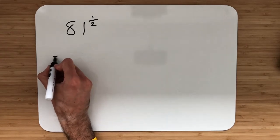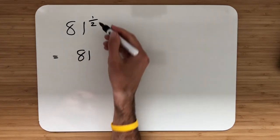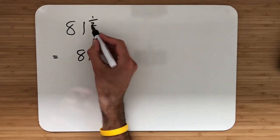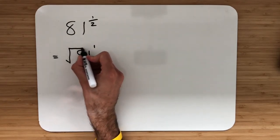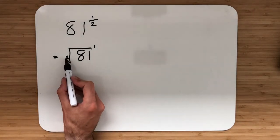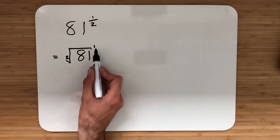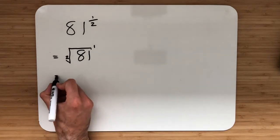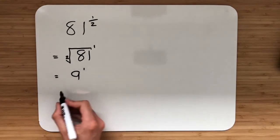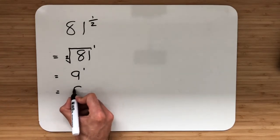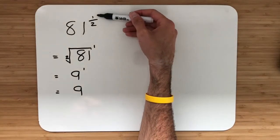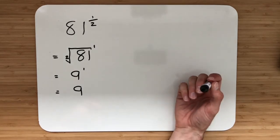So what I mean by that: the top number stays, so the 1 stays as the power, but the bottom number strays to the outside of the root sign. That now reads as the square root of 81 to the power of 1. The square root of 81 is 9, and 9 to the power of 1 is simply 9. Remember: top number stays, bottom number strays.